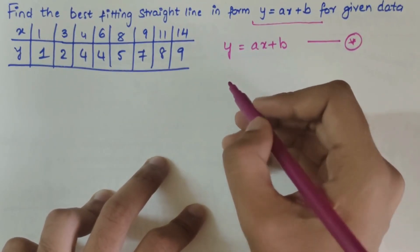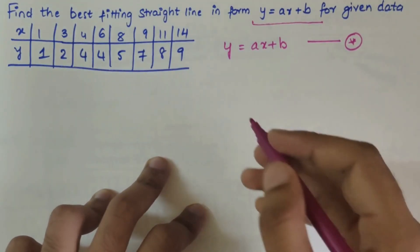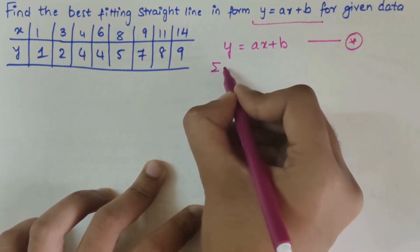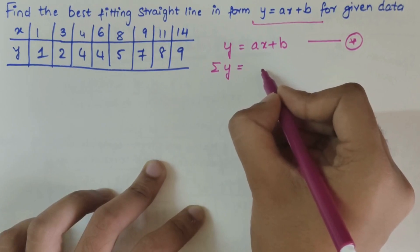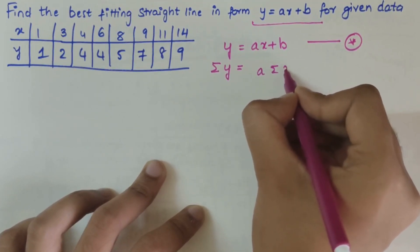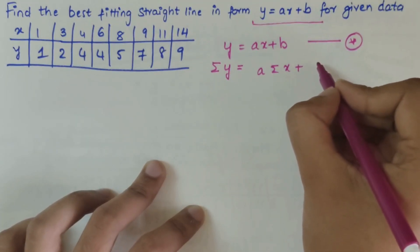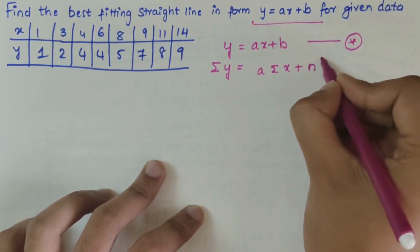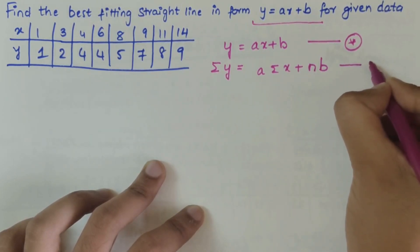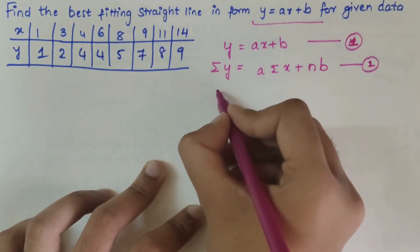Next let us consider the normal equations. First write summation of y equals a summation x plus, since there are no x or y terms, you write as nb. This is our first equation. This is our second equation.